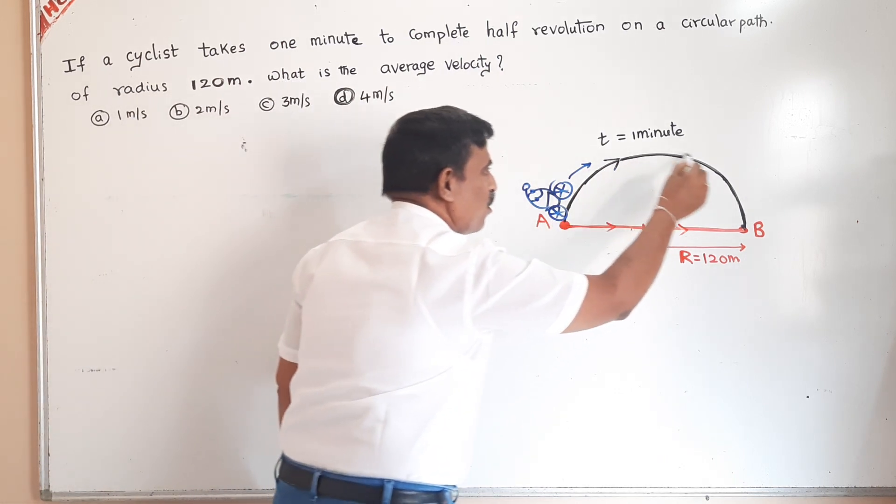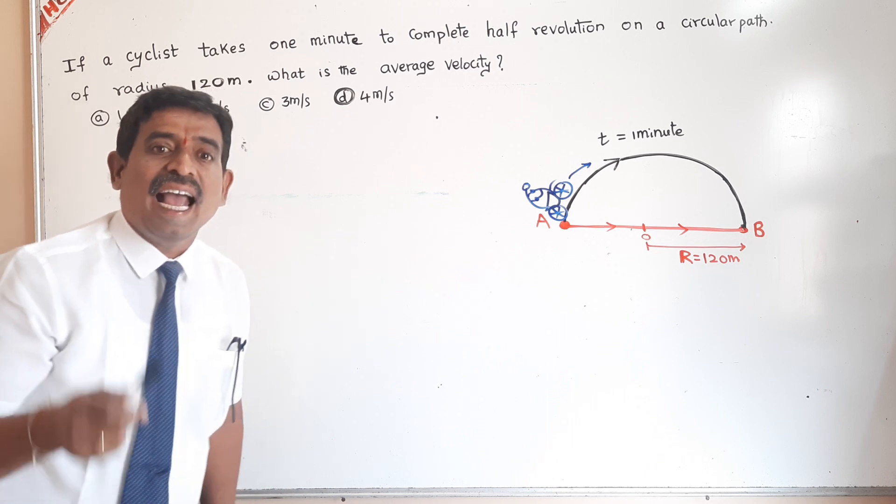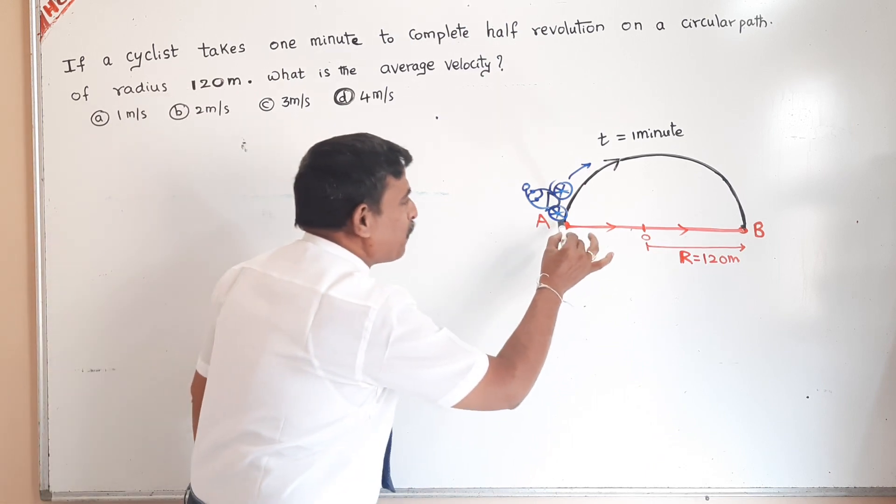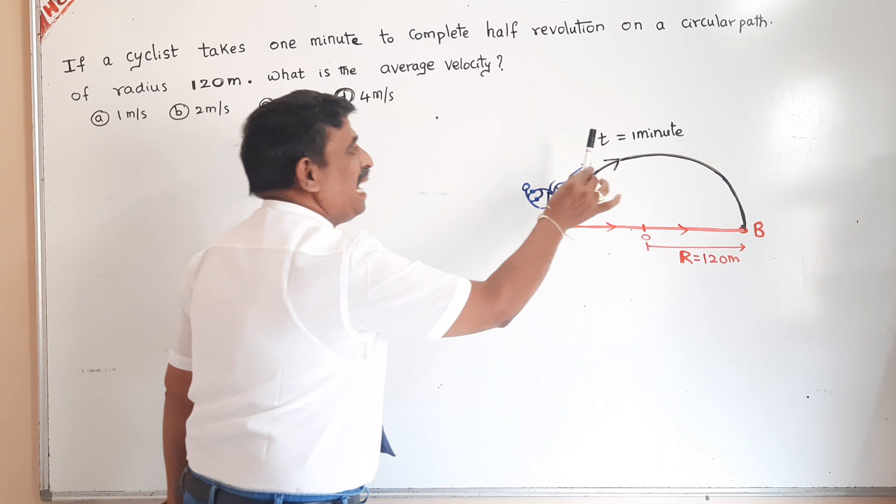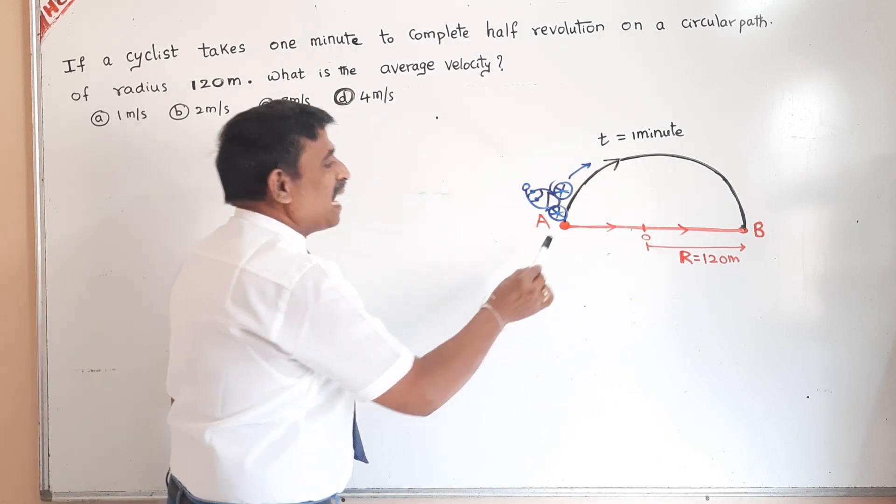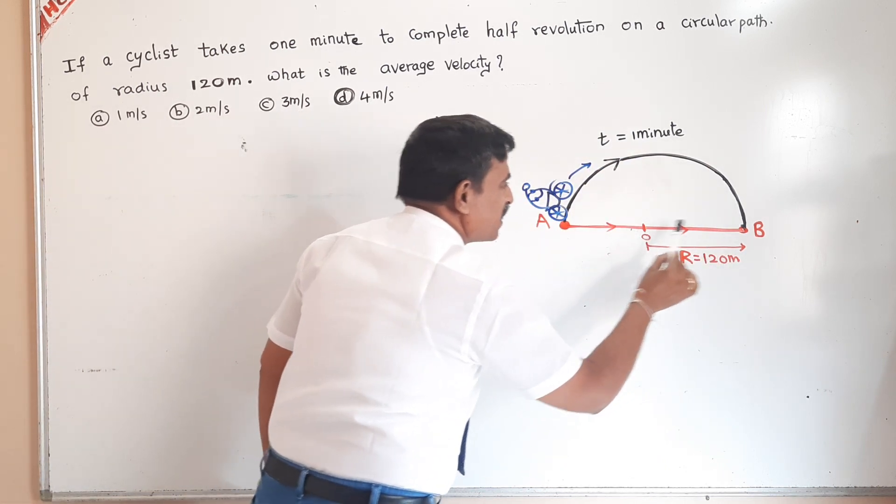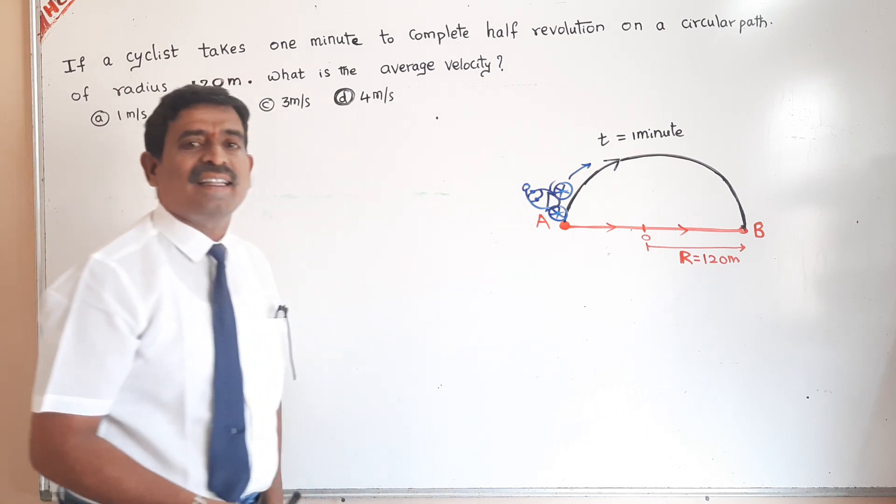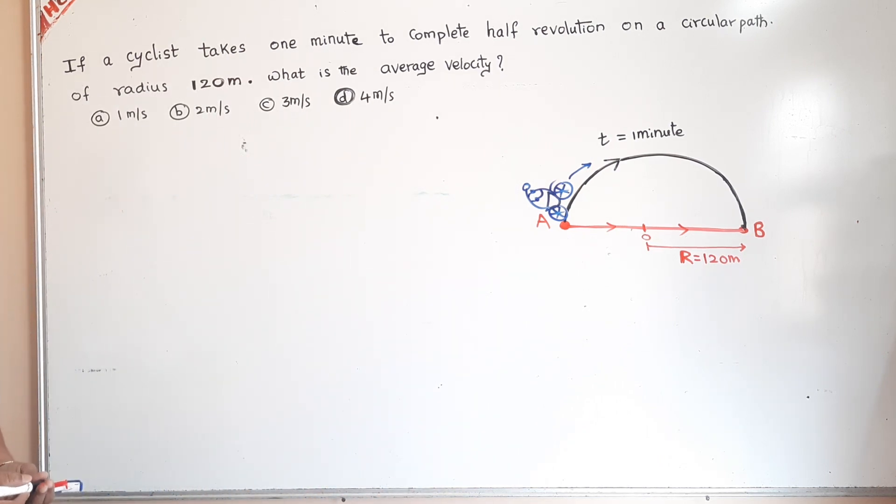Here there is a circular track. A cyclist is completing a half revolution in one minute. The radius of the circular path is 120 meter. They are asking what is average velocity?